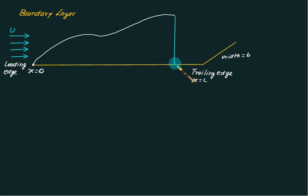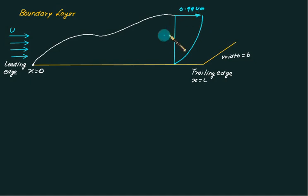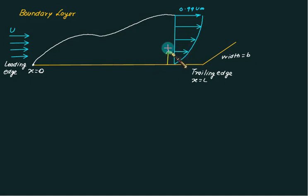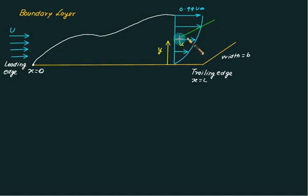The velocity profile is such that the maximum velocity up to a certain height is 0.99 u-infinity, and this height is called the boundary layer thickness. The velocity goes on decreasing as we approach the fixed plate. At any vertical distance y we have local velocity equal to u, and there is a definite relation between u and u-infinity. A small thickness parallel to the width has an area equal to b multiplied by dy.